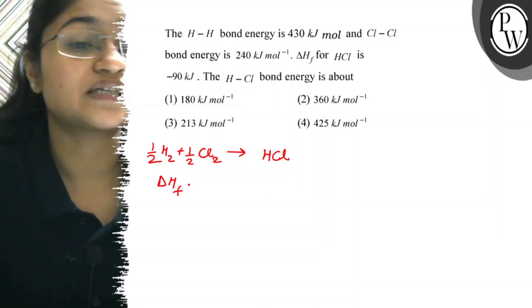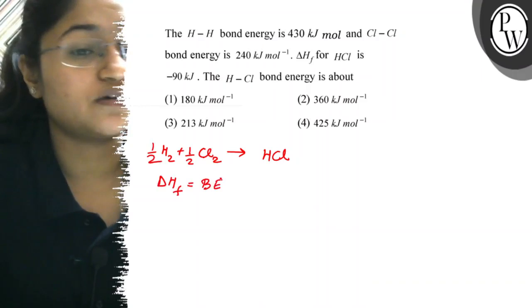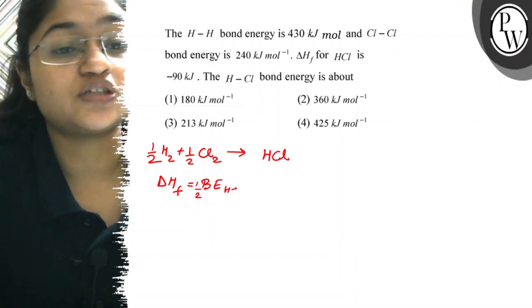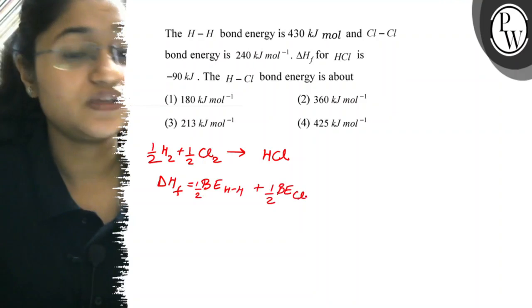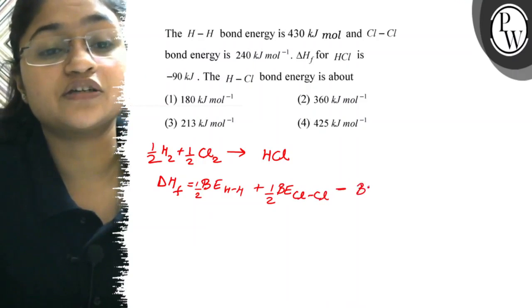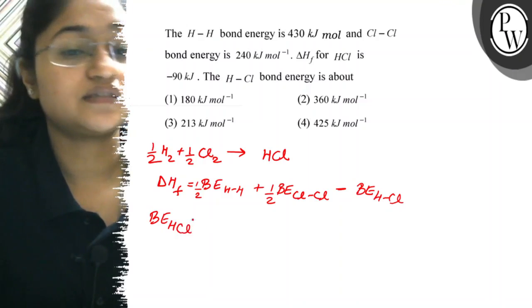What can we write? Heat of formation will be half of bond energy of H-H bond plus half of bond energy of Cl-Cl bond minus bond energy of HCl. Now we need to find bond energy of HCl.